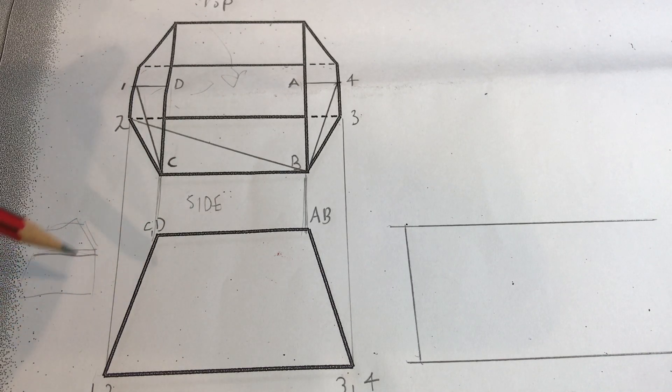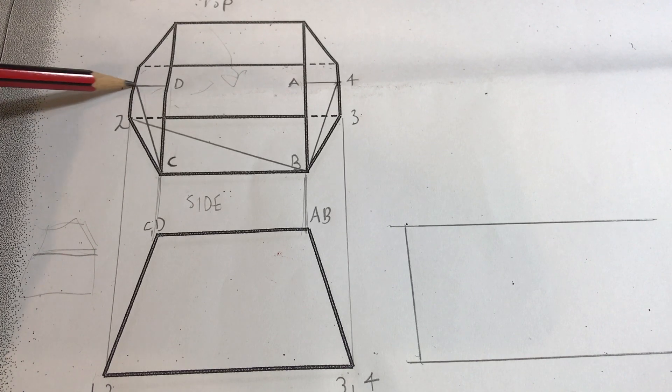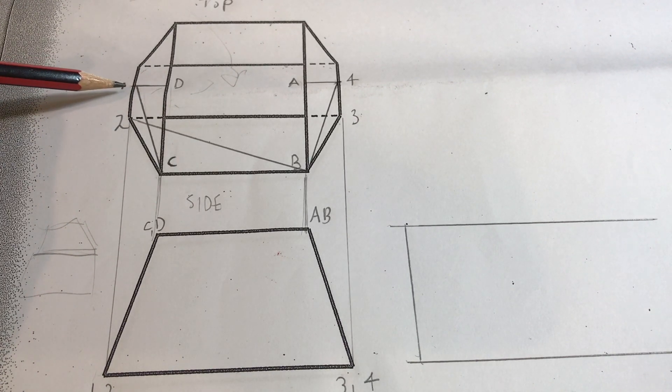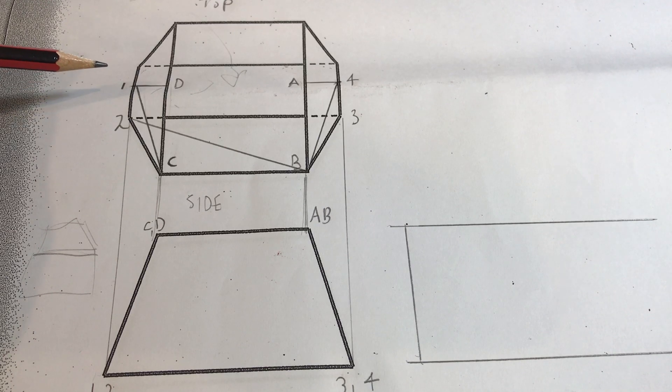So you start with, when you're going to do your view, one of the first things you do is you start with one side. So I'm going to start with this side here, 1d. Now we know 1d is actually a true length, and we know it's a true length because it's perpendicular to the viewer. So 1d is our true length.